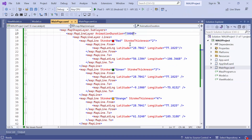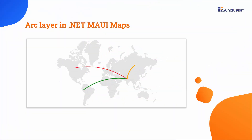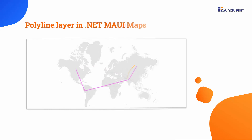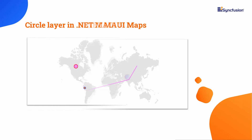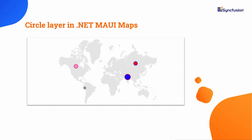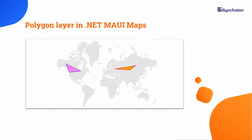Similarly, you can add different sublayers to enhance the functionality and visual representation of the maps control. The map arc layer allows you to connect two location coordinates through a curved line. The map polyline layer is used to add polylines on the map. The map circle layer allows you to create multiple circles at different locations. The map polygon layer is used to render multiple polygons. Refer to the documentation provided below to learn more about these layers.